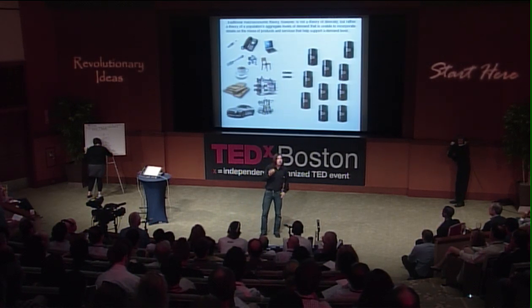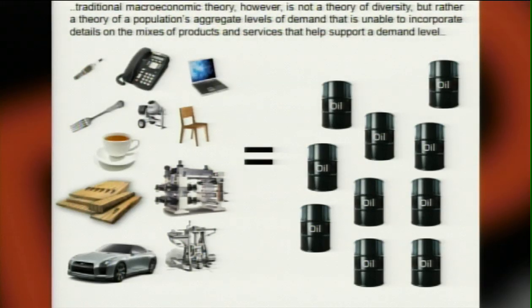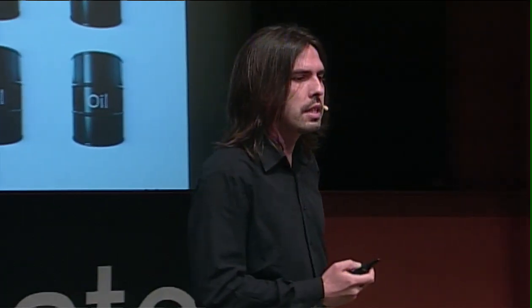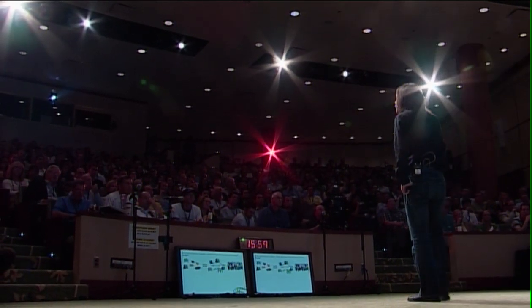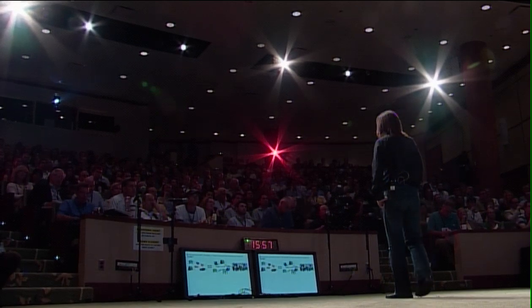The traditional theories we have are not theories of diversity; they're theories of aggregate levels of demand. In those theories, exporting a lot of oil and buying all imports with that money is equivalent to having a very diverse productive structure where people can do many different intricate things, specialize, and have the know-how to produce sophisticated products.